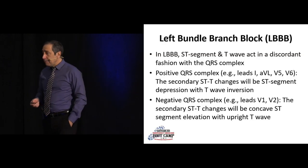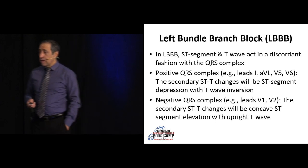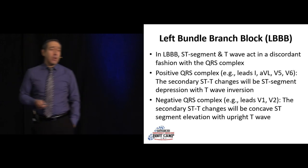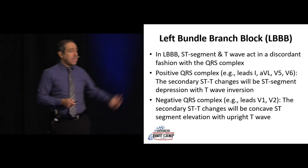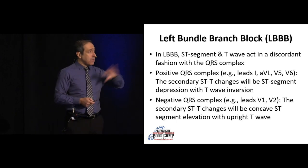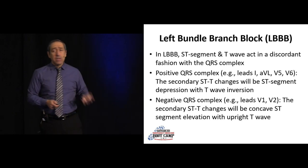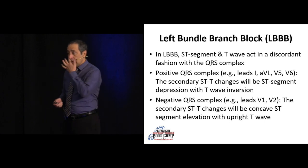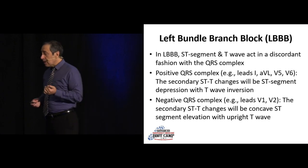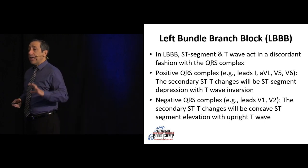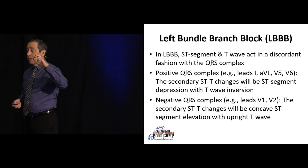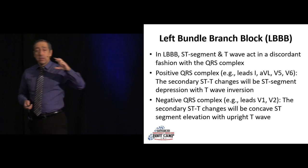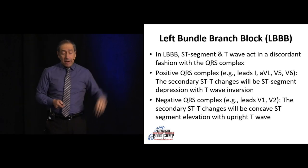In left bundle branch block, we want discordance and we want STs to be less than five millimeters. When any of those features are not met, that's concerning. It is very concerning if you have QRS up and ST up — that is not what you should see.